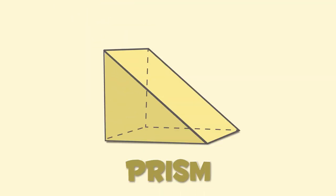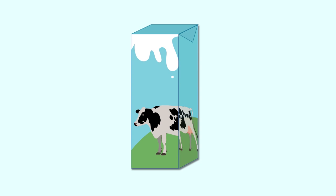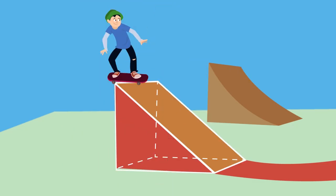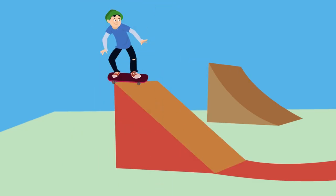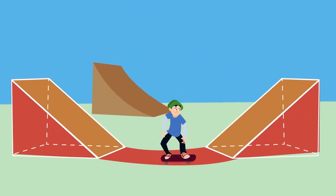This is a prism. Both faces of the prism are identical. There are many types of prisms — this milk carton is a prism, and as you can see, both of its faces are identical squares. But in this prism, its bases are triangles — it looks like a skating ramp.